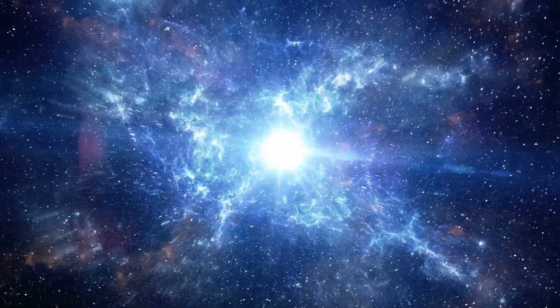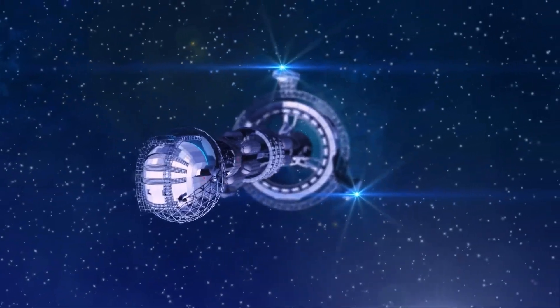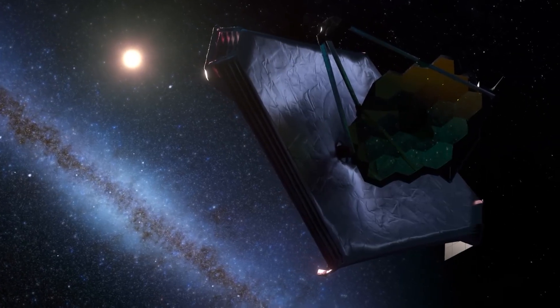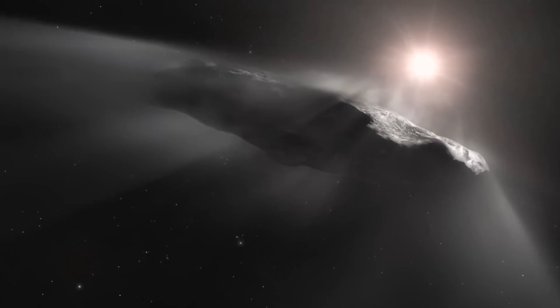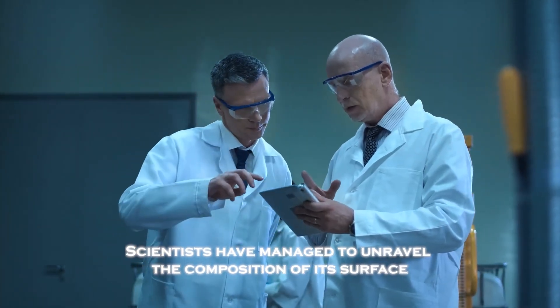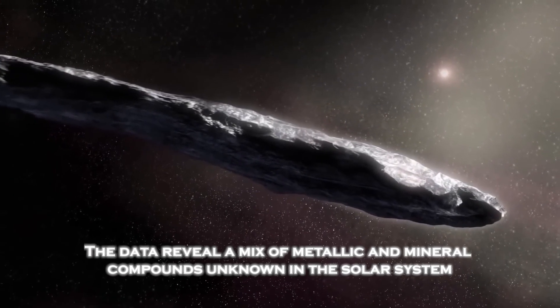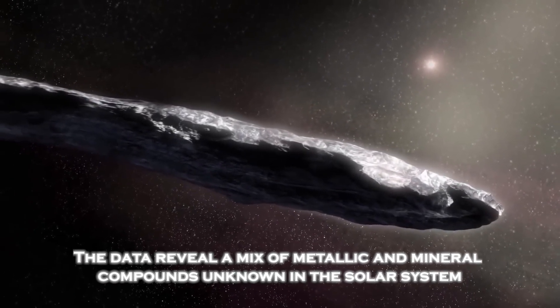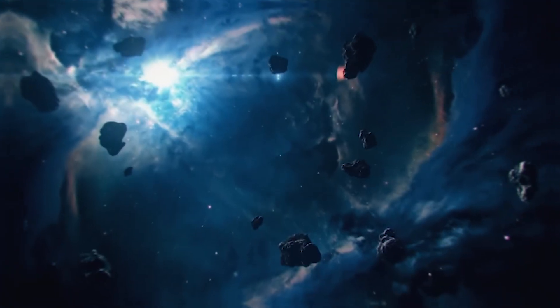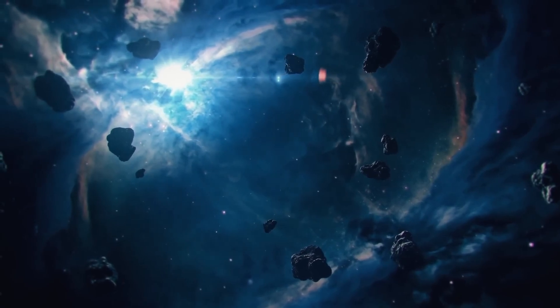Thanks to the James Webb telescope's ability to analyze the light reflected by Oumuamua, scientists have managed to unravel the composition of its surface. The data reveal a mix of metallic mineral compounds unknown in the solar system, along with traces of elements that could form organic molecules.